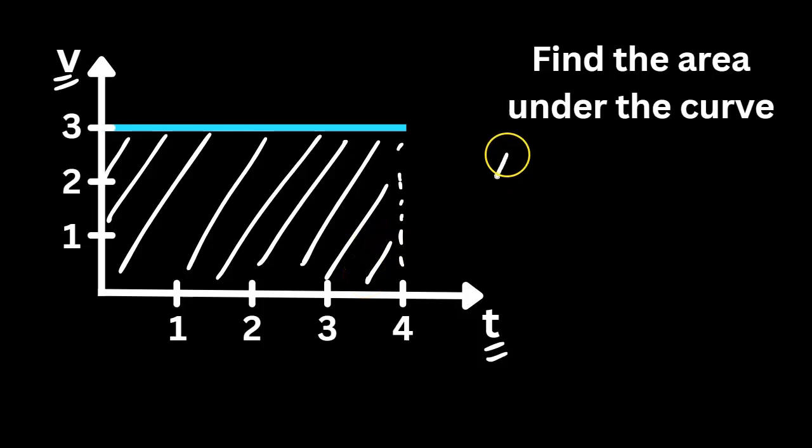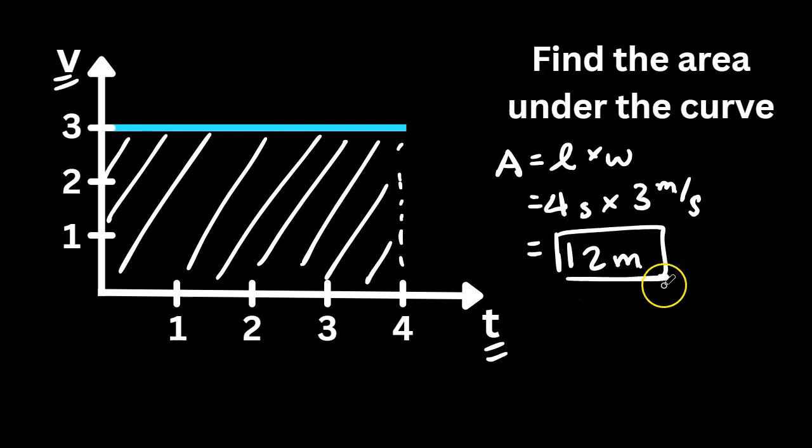So we can use the equation for the area of a rectangle, length times width. The length here, 4 seconds, the width is 3 meters per second, and 4 times 3 is 12. Notice the seconds canceled out. That leaves us with meters, and our area is 12 meters.